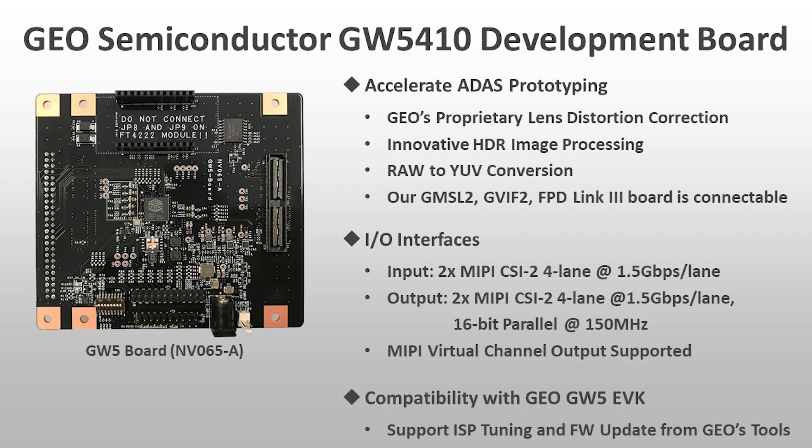The GW5 includes powerful features dedicated to automotive camera system development, such as innovative HDR image processing, lens distortion correction, and roll-to-IOV conversion. For video input, the GW5 board has two MEPI CSI2 interfaces.